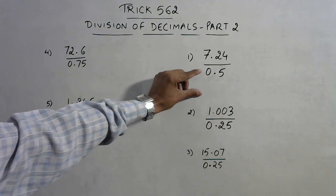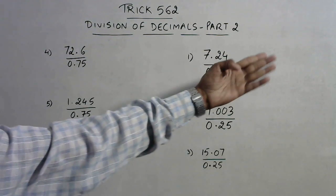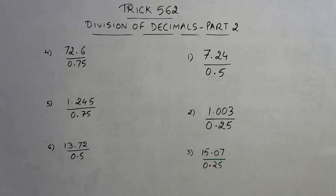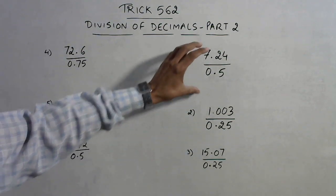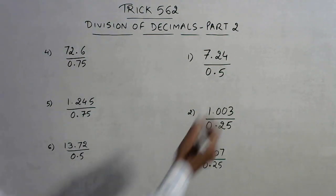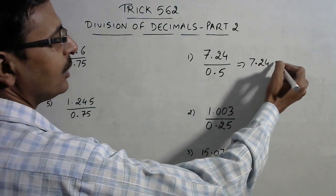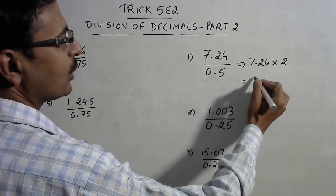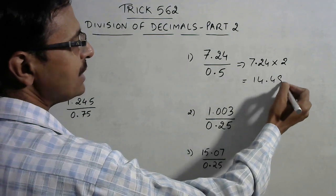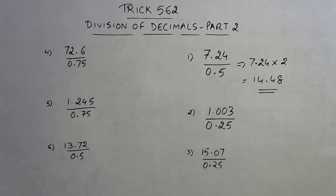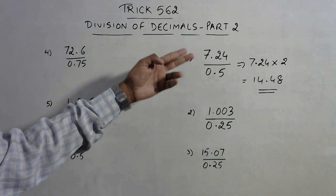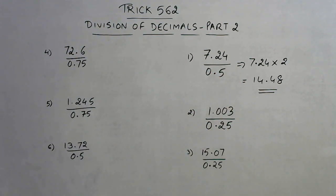Actually 0.5 is nothing but half, and when half comes in the denominator it becomes multiplied by 2 when it moves to the numerator. So actually if you see this question, you should know that the answer will be the double of the numerator, that is 14.48. So very easy: 7.24 into 2 gives you 14.48.